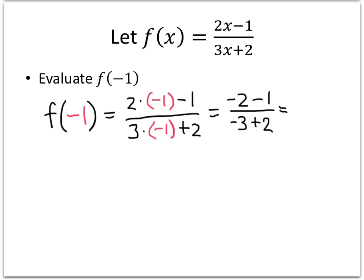So on the top now, minus 2 minus 1 is negative 3. And on the bottom, negative 3 plus 2 is negative 1. And then finally, negative 3 divided by negative 1 works out to be positive 3. So positive 3 is our answer.